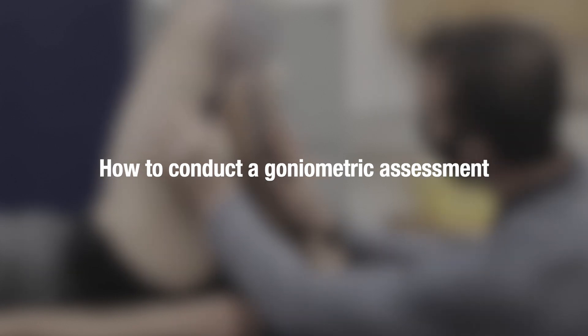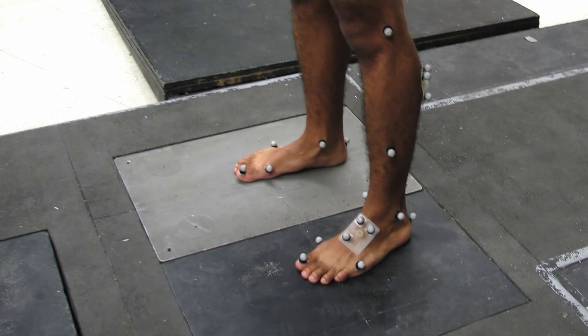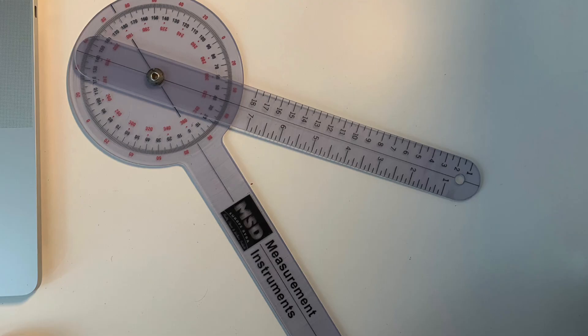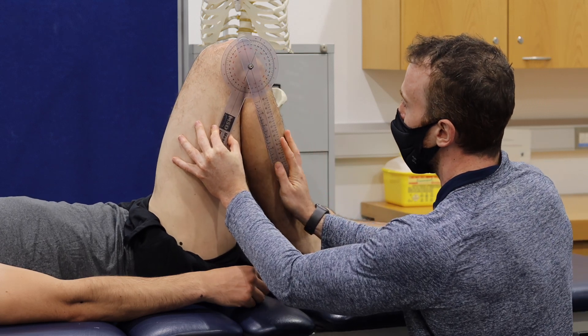In part two we will outline how to conduct a goniometric assessment. There are many ways to conduct an assessment of range of motion. An examiner may choose a particular instrument based on the purpose of the measurement — whether for clinical or research purposes — the motion being measured, and the instrument's accuracy, availability, cost, ease of use and size. This could range from costly but very accurate techniques such as 3D motion analysis or an electrogoniometer, to more clinically applicable techniques such as a simple tape measure or a goniometer itself. It is the goniometric method on which we will focus in this lecture.